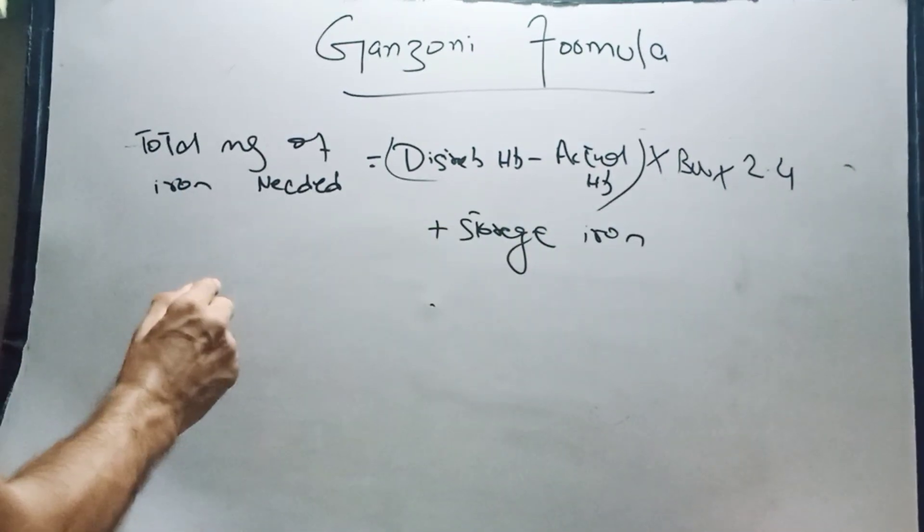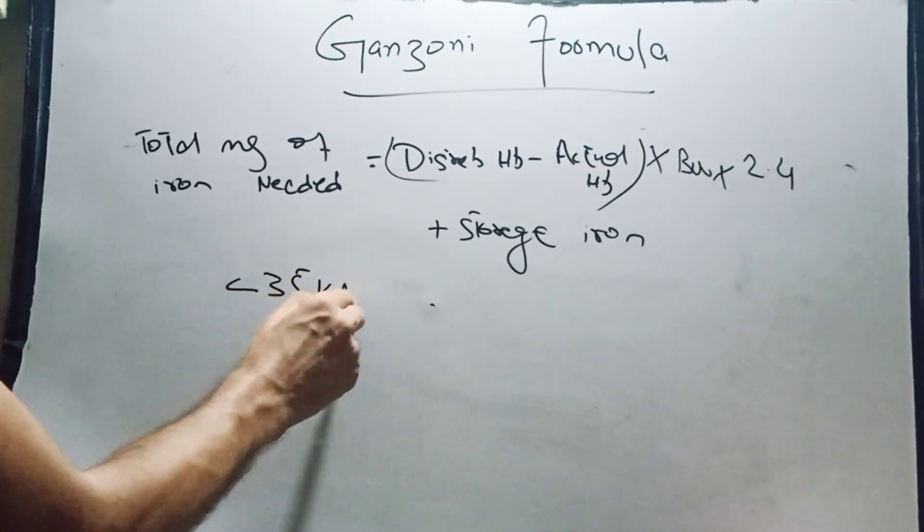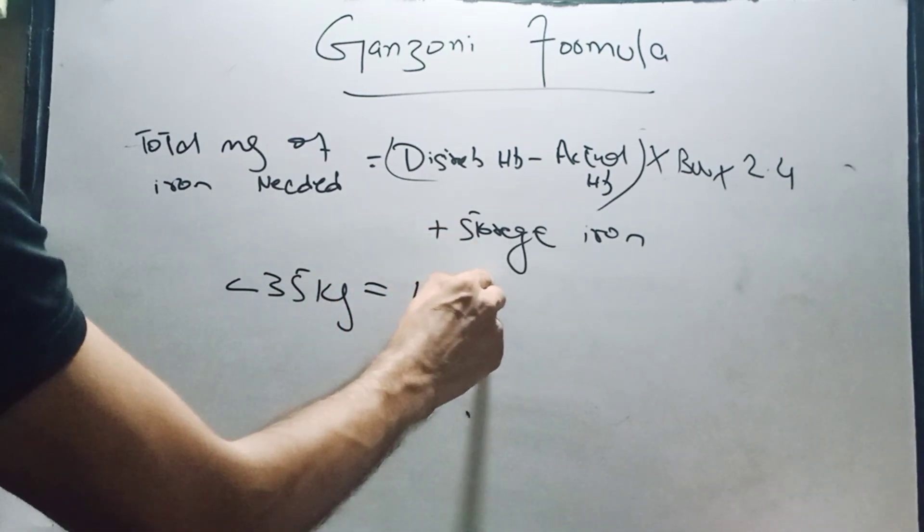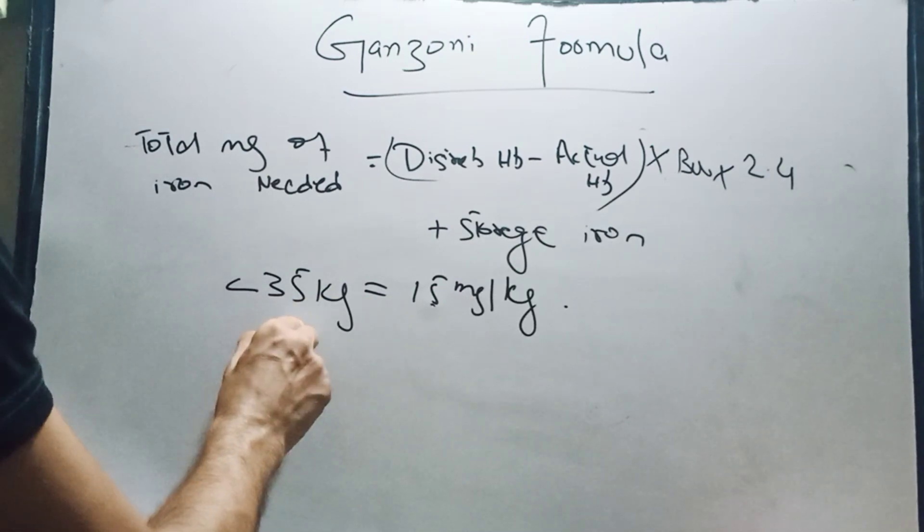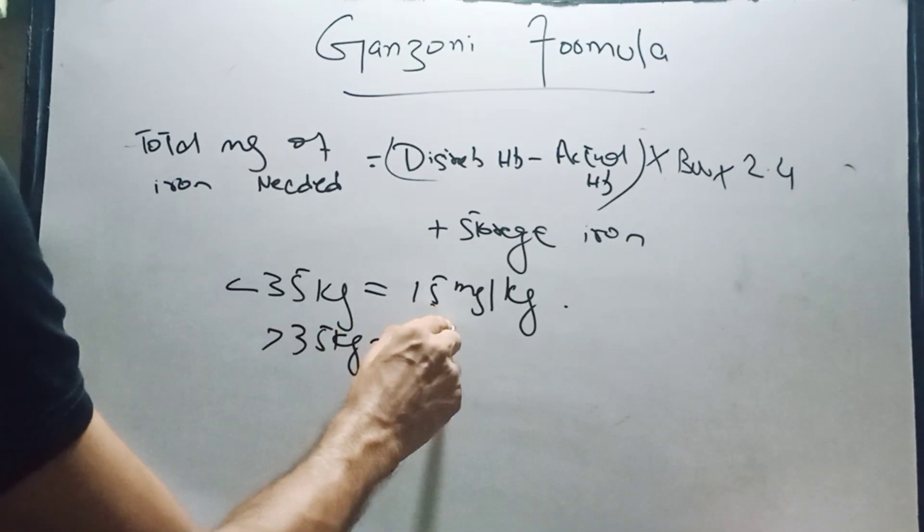If the patient body weight is less than 35 kg, we take 15 mg per kg as storage iron. If weight is greater than 35 kg, storage iron is taken as 500 mg.